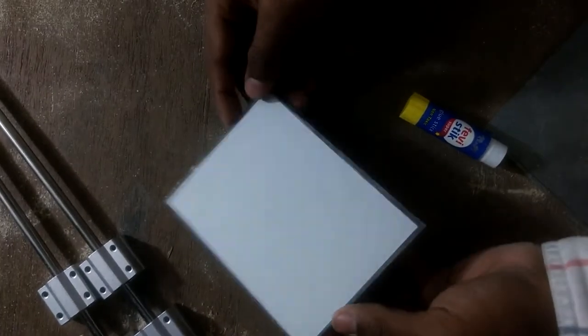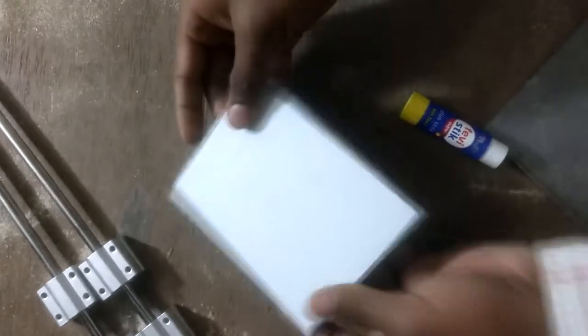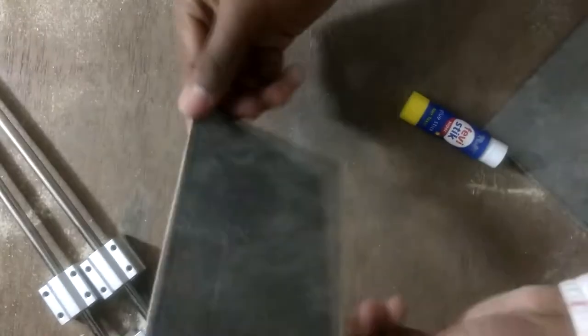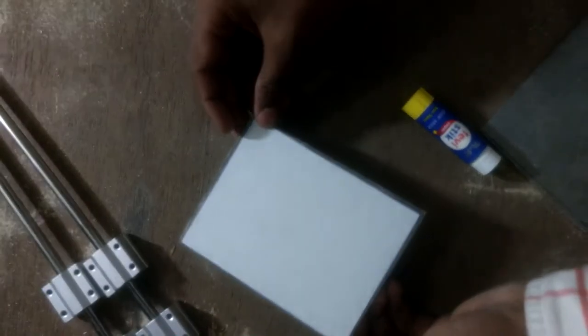We've completed the gluing of the paper on this aluminum sheet. Now after this, we will start filing it.